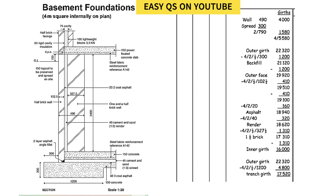So how do we go about it? We start by understanding that this is a four-meter square basement. That means the length is four meters and the width is four meters. I'll be highlighting whatever I'm talking about — just follow by looking at where the color is. The internal dimensions are four meters, which is four thousand millimeters.